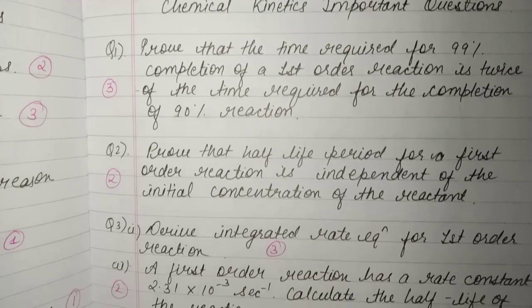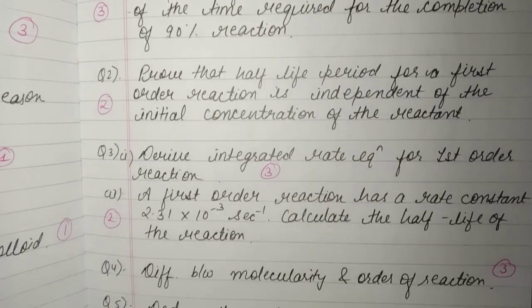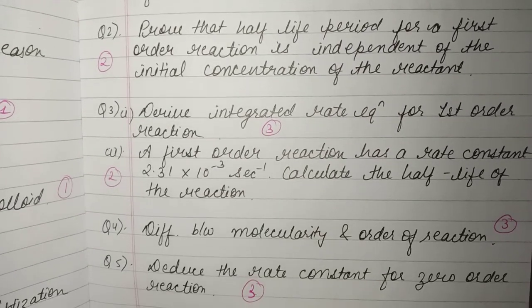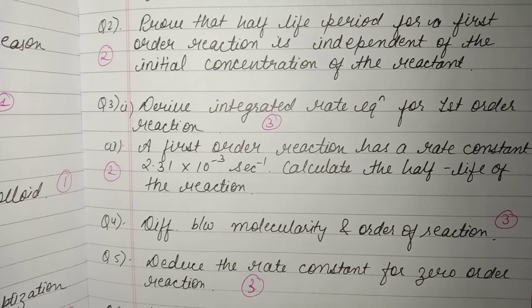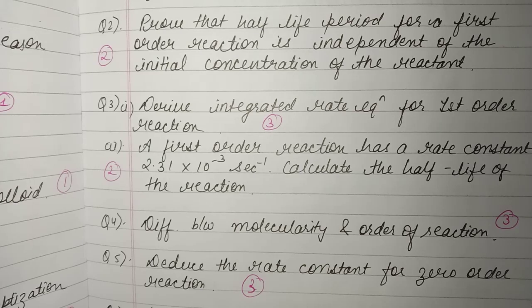Then the third question is to derive the integrated rate equation — this derivation is very important. After that, the fourth is a numerical where half-life and rate constant are related, and you can solve it from that.